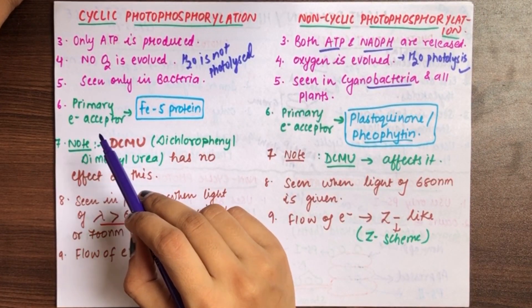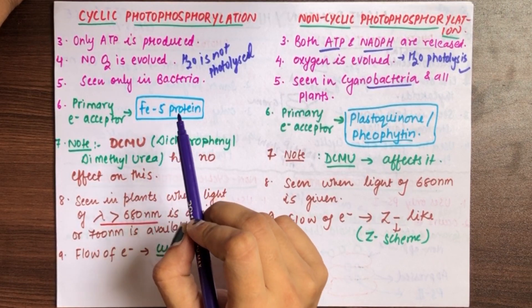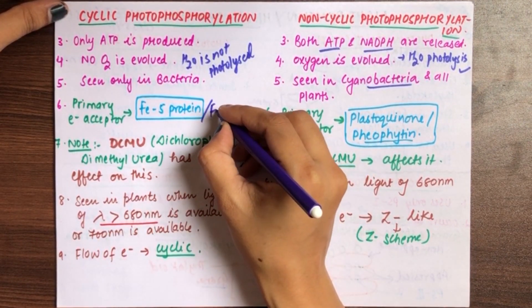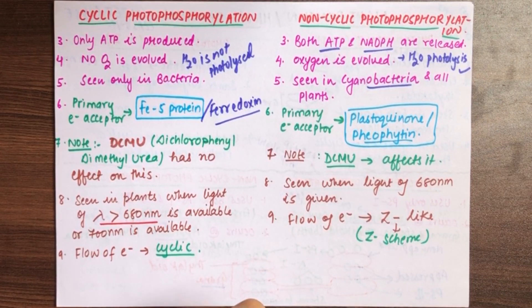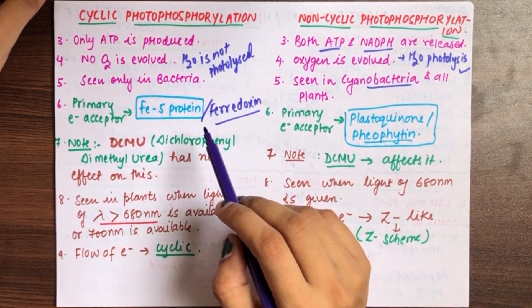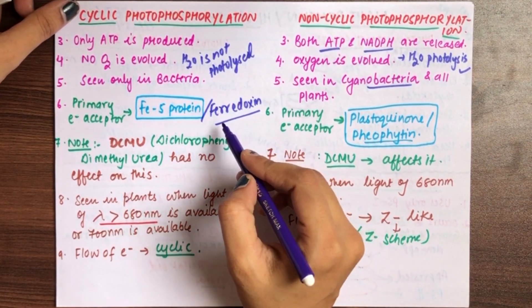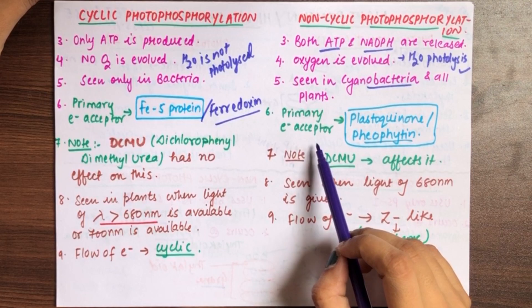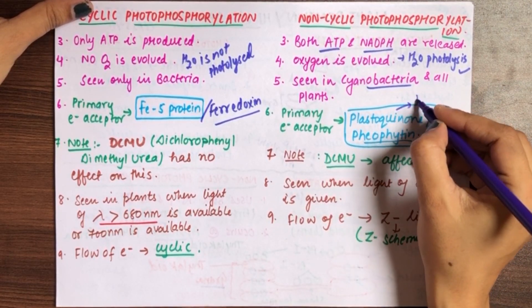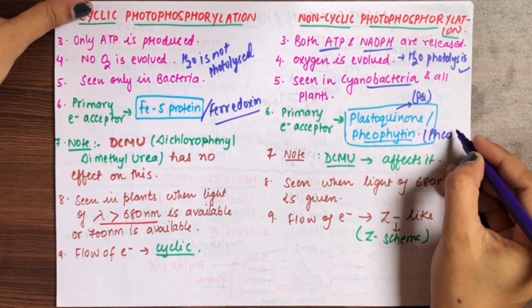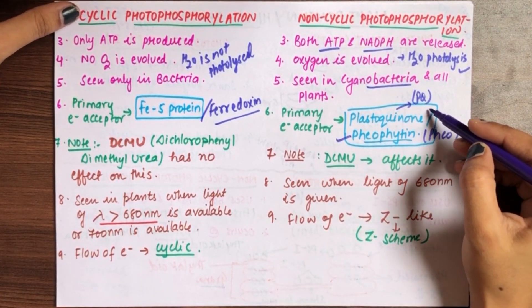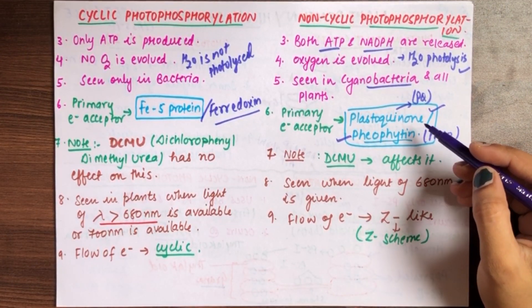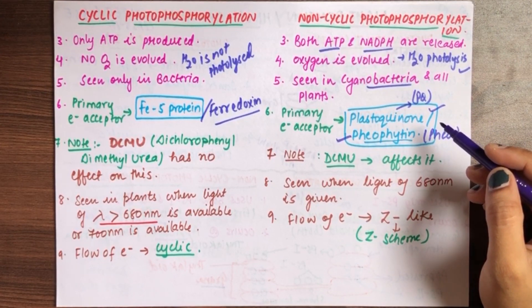Next, the primary acceptor of electron in case of cyclic photophosphorylation is FES protein, iron sulfur protein. If you don't get this option, you will get ferridoxin. In non-cyclic, the primary electron acceptor is plastoquinone PQ, but in actual it is pheophytin. So if there is pheophytin, then do pheophytin first. If there is no pheophytin, then plastoquinone according to NCRT.